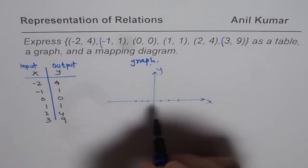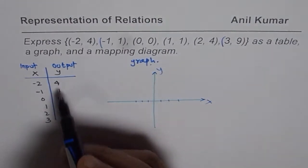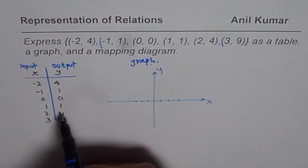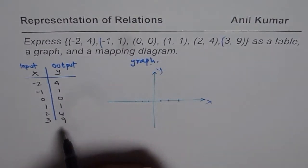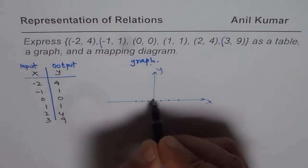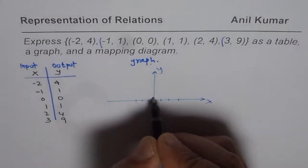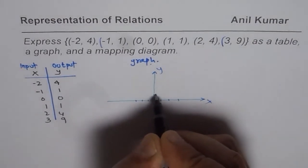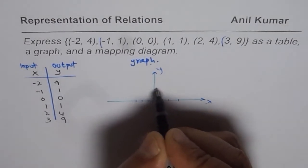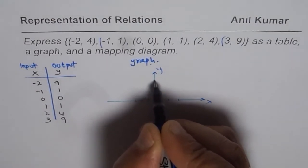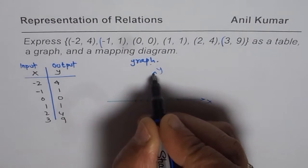That is the y-axis. The y points range from one to nine, so let me mark the y-axis with values one, two, three, four, five, six, seven, eight, nine.